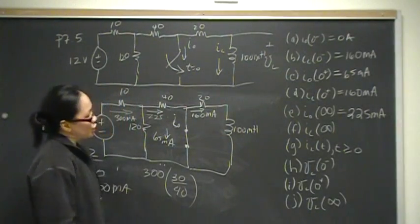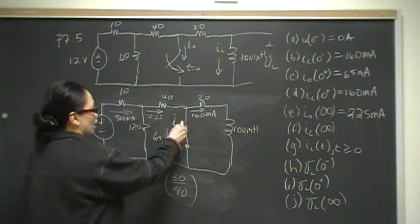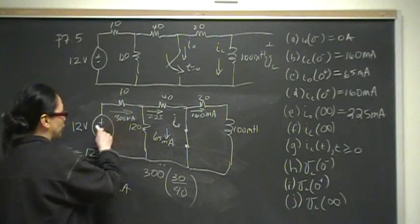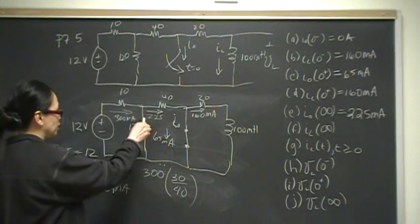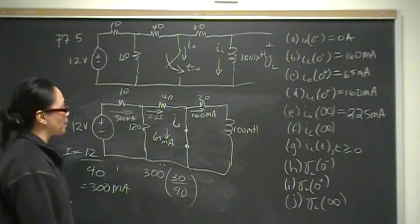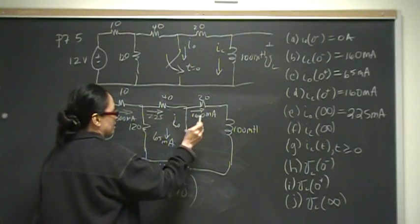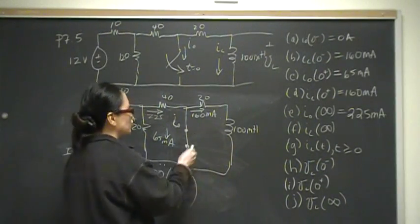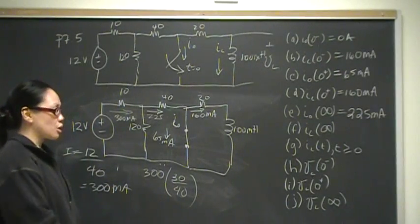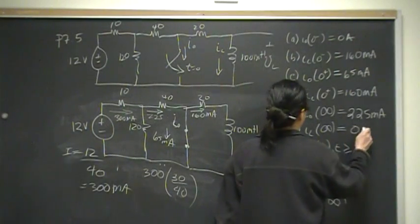For the inductor current at time infinity: when the switch closes, it shorts out the power source, so there's nothing charging the inductor. Whatever energy was stored in the inductor will dissipate and be used up. Therefore, the inductor current at time infinity is zero amps.